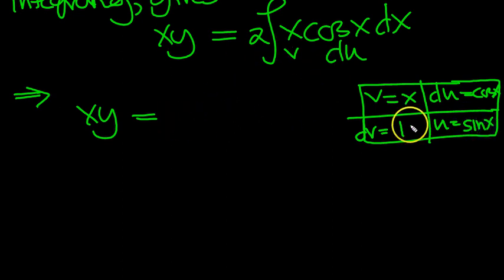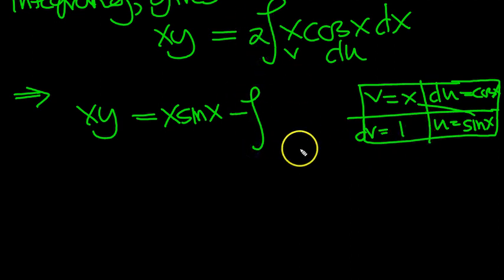So the first thing is uv, these two: x sin(x). Minus the integral of, and I'm going to worry about this 2 lots of in a minute. Don't worry about that. Minus the integral of u dv. So that's sin(x) times 1, which is sin(x) dx.